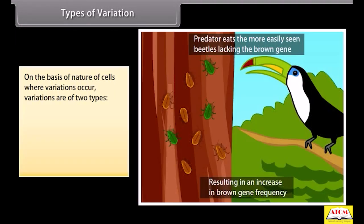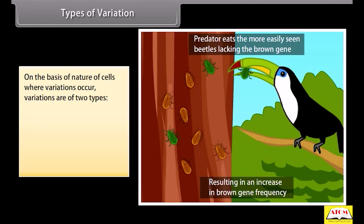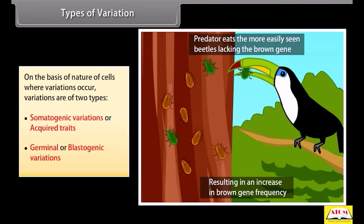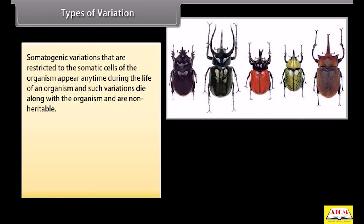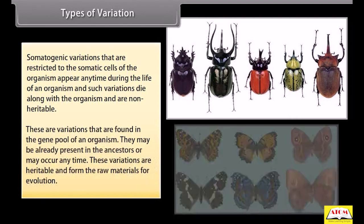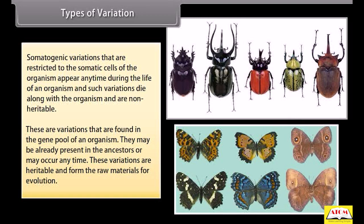On the basis of the nature of cells where variations occur, variations are of two types: somatogenic variations, or acquired traits, and germinal or blastogenic variations. Somatogenic variations are restricted to the somatic cells of the organism, appear any time during the life of an organism, die along with the organism, and are non-heritable. Germinal variations are found in the gene pool, may already be present in ancestors or occur any time, are heritable, and form the raw materials for evolution.